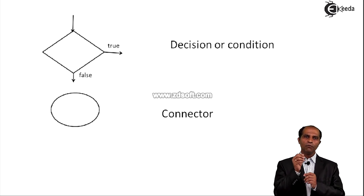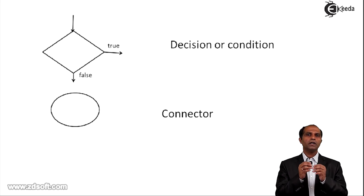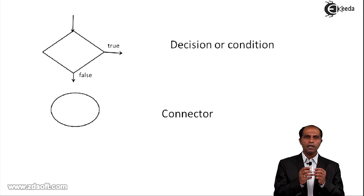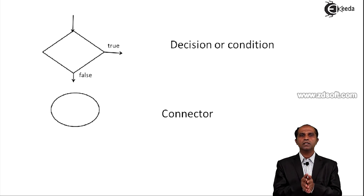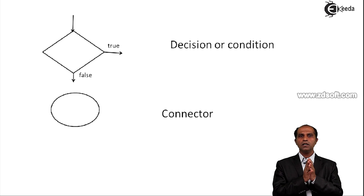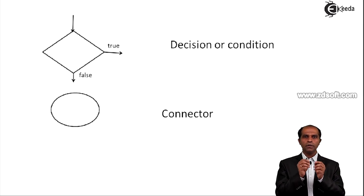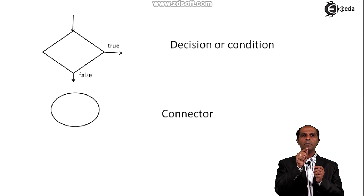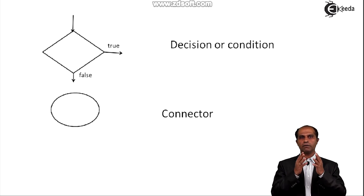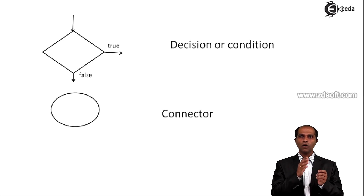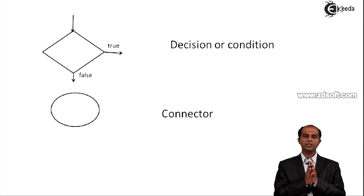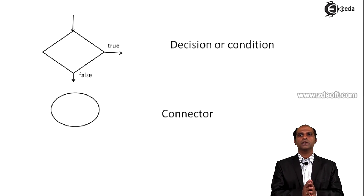The other symbol used is a connector, represented by a circle. Not every algorithm needs a connector — it is used when the flowchart spans multiple pages, providing connectivity from one page to another. The circle will have input as well as output arrows. Wherever you want to end on one page, the circle will have only an input arrow. The circle is marked with a character such as 'A', '$', or '#', creating a virtual connection from one page or one side to another. These are the various symbols used in a flowchart.